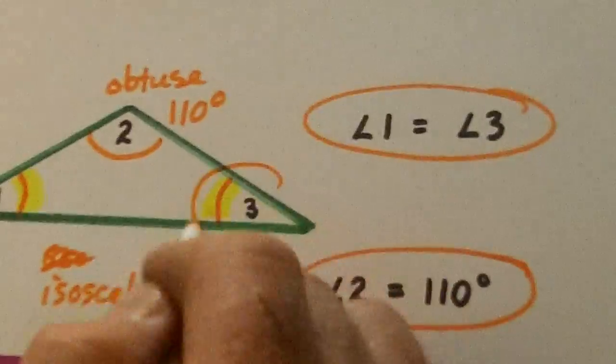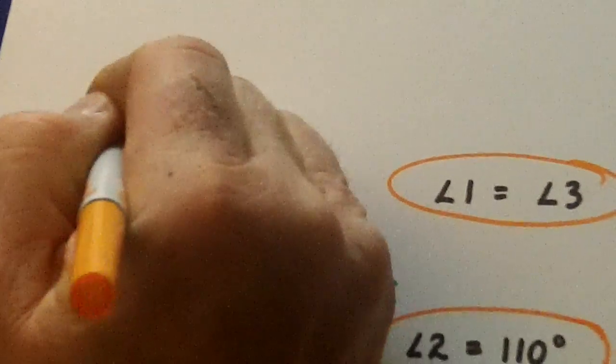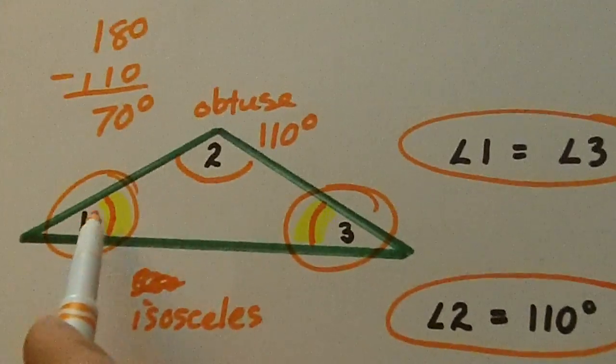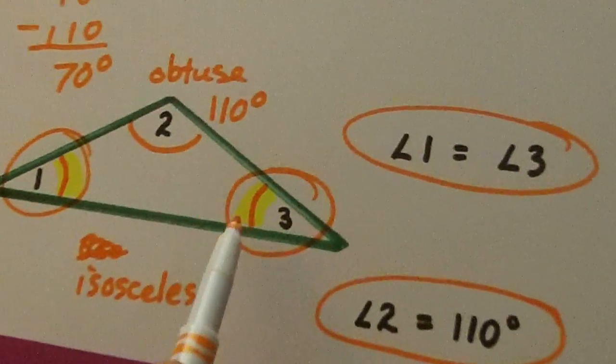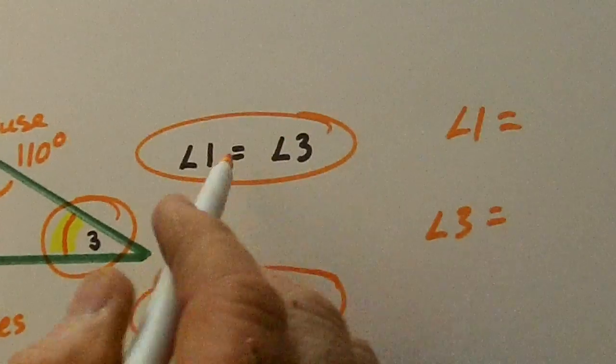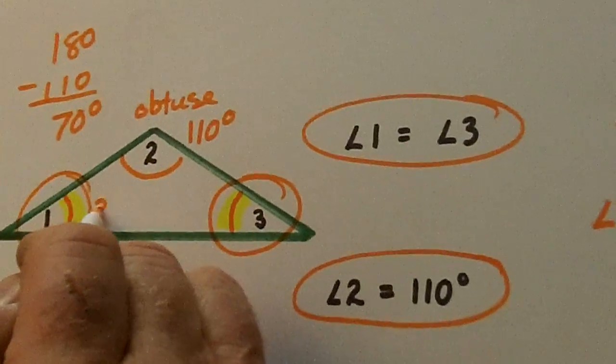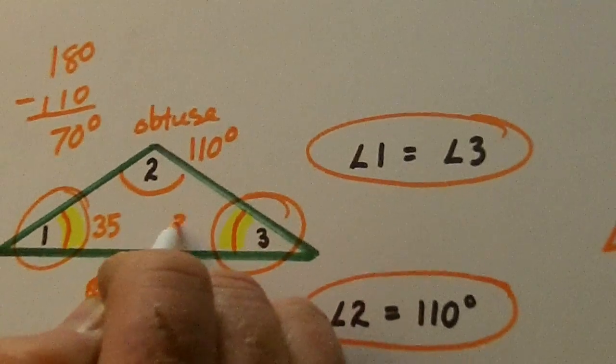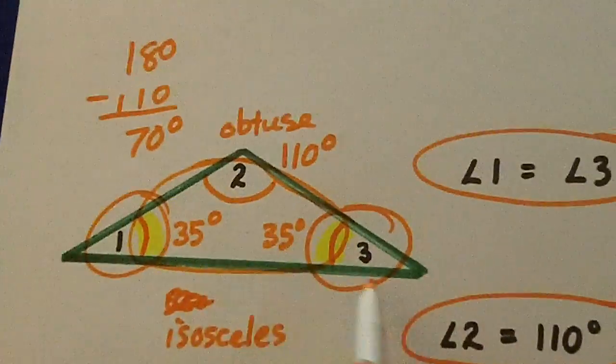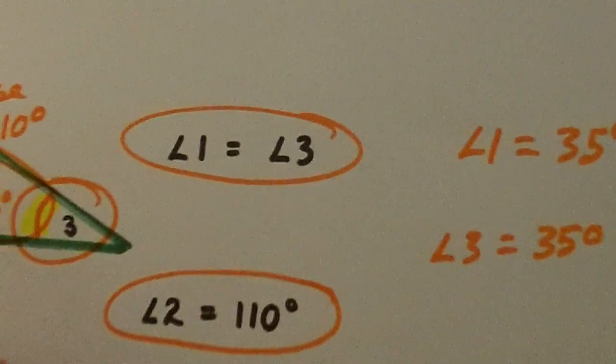What we do to find out these, we say 180 minus 110 is 70 degrees. But that's not 70 degrees for each one. These two, angle one and three, equals 70. So we simply divide 70 in half. This is 35. This is 35. Now together, those all equal 180 degrees.